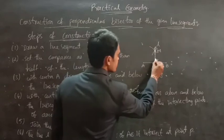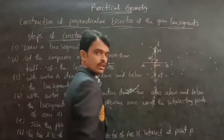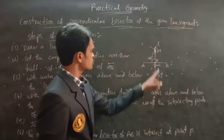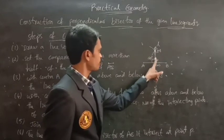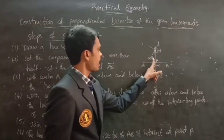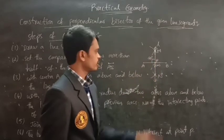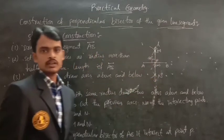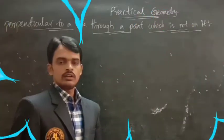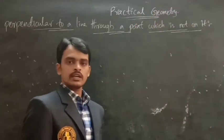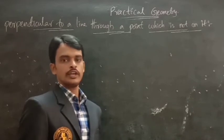Look at here — this angle is 90 degrees. The angle formed between the two line segments is 90 degrees, so these two are perpendicular bisectors to each other. Let us now construct a perpendicular bisector in another way.